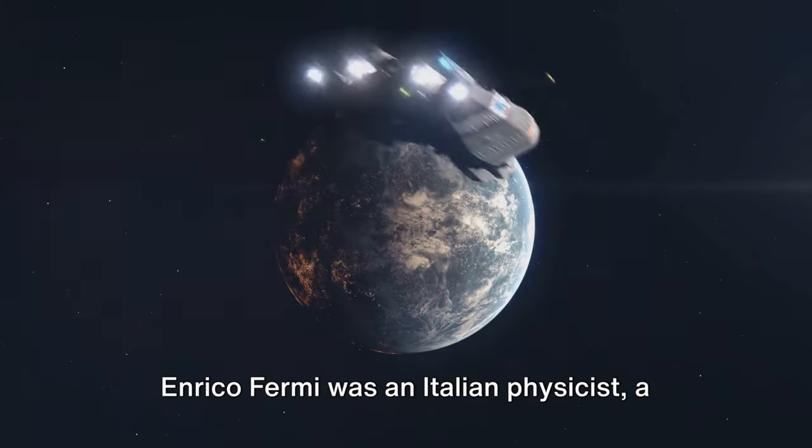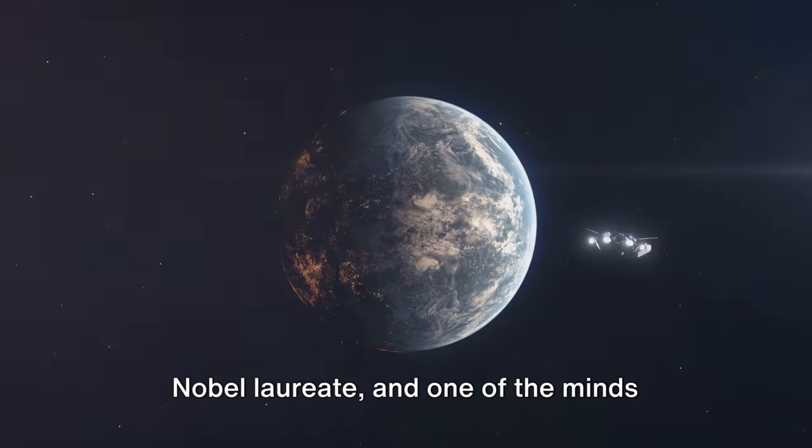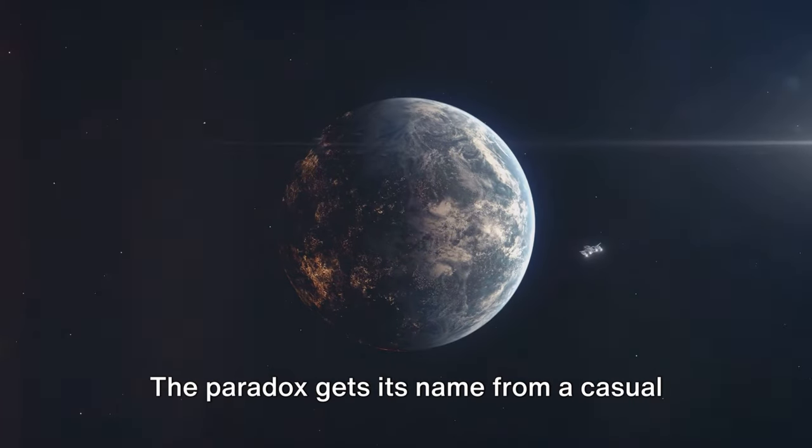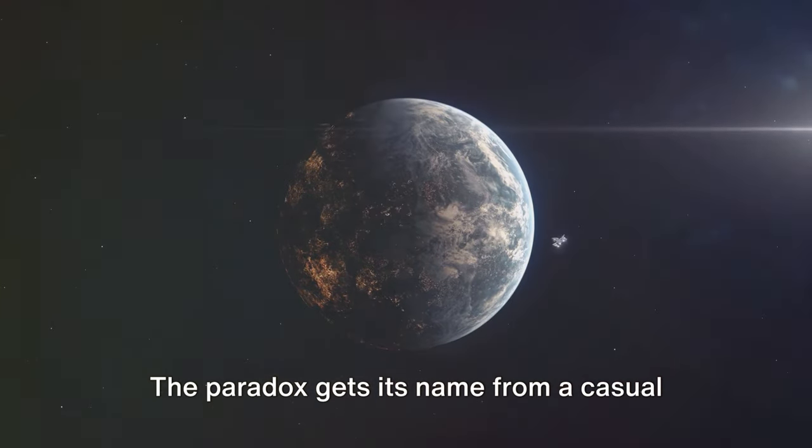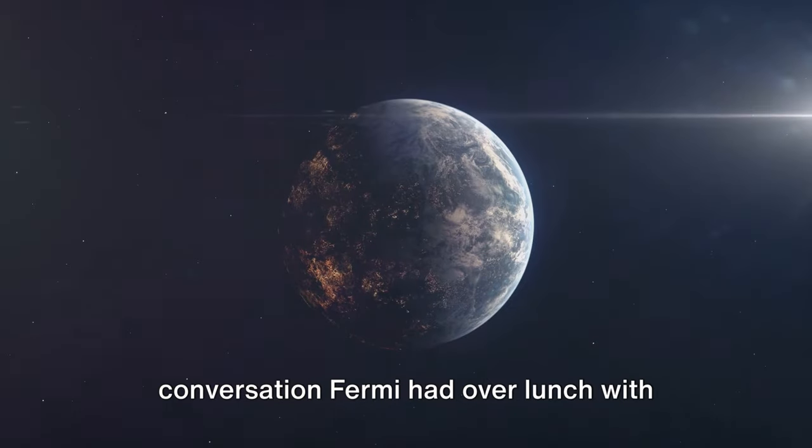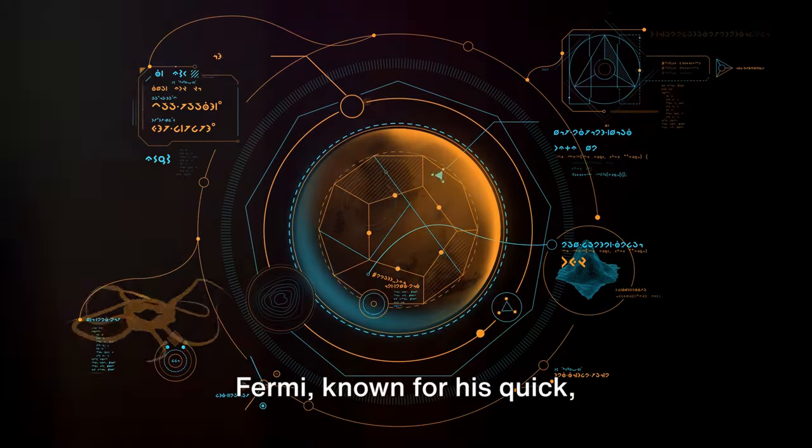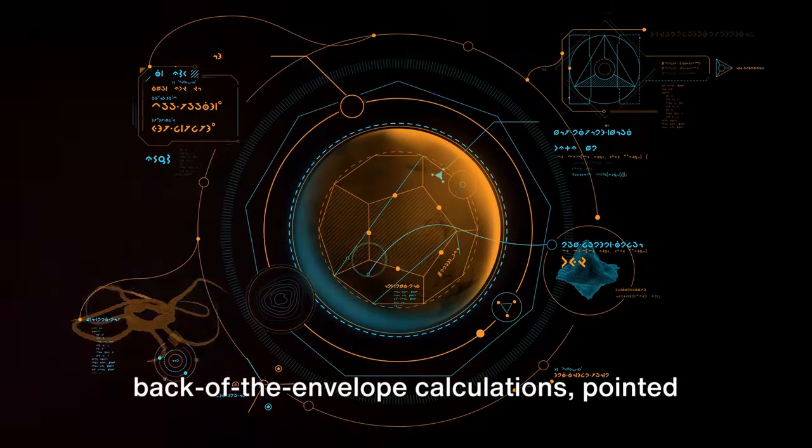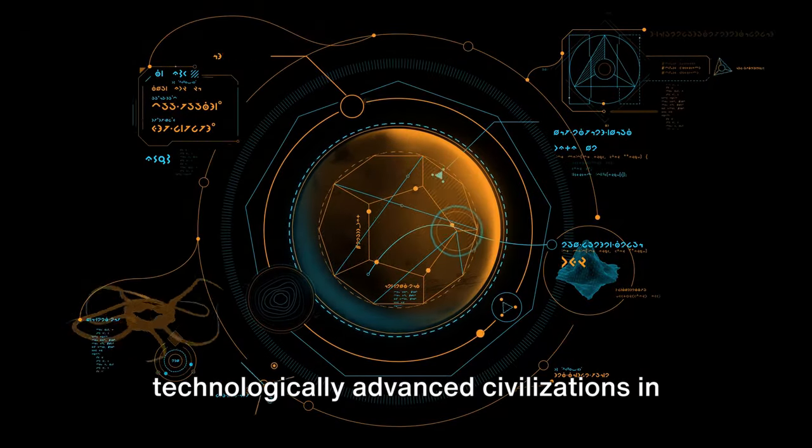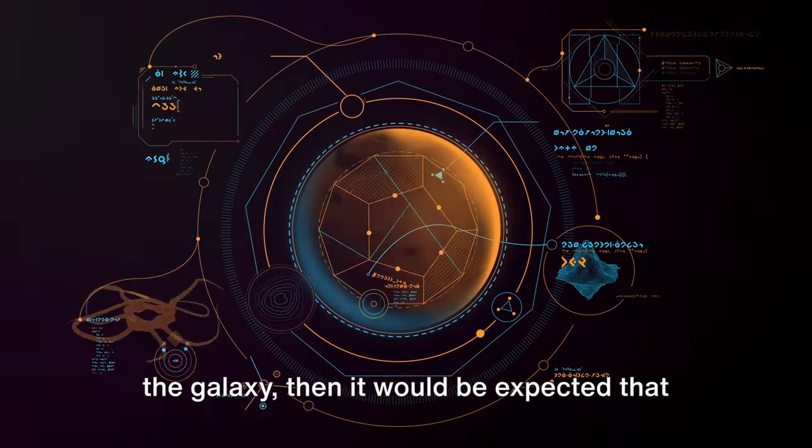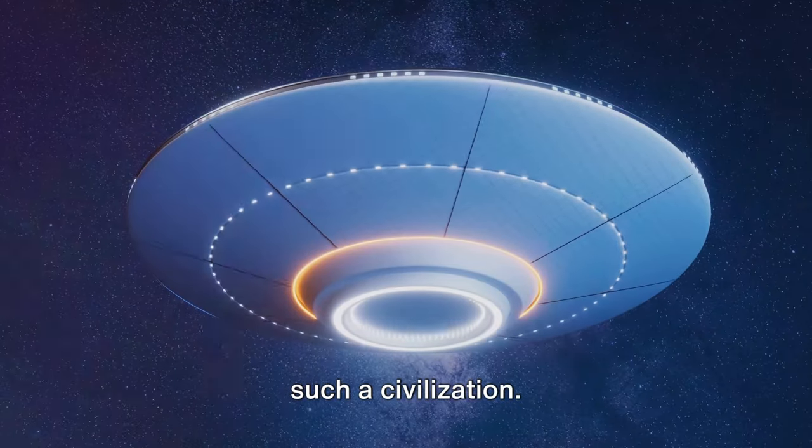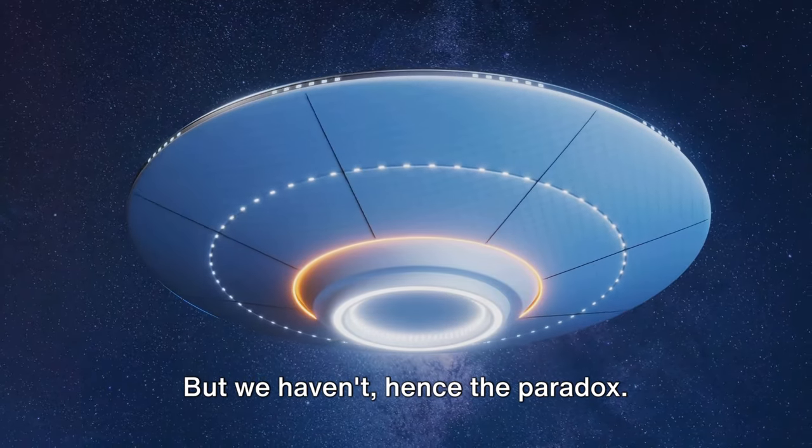Enrico Fermi was an Italian physicist, a Nobel laureate, and one of the minds behind the creation of the first nuclear reactor. The paradox gets its name from a casual conversation Fermi had over lunch with colleagues in the summer of 1950. Fermi, known for his quick, back-of-the-envelope calculations, pointed out that if there are a large number of technologically advanced civilizations in the galaxy, then it would be expected that we would have already had contact with such a civilization. But we haven't, hence the paradox.